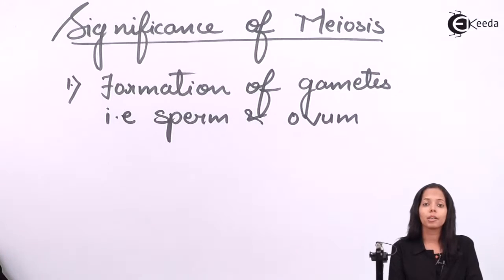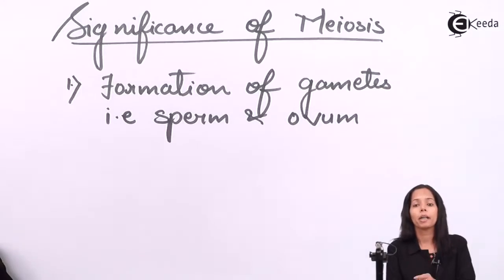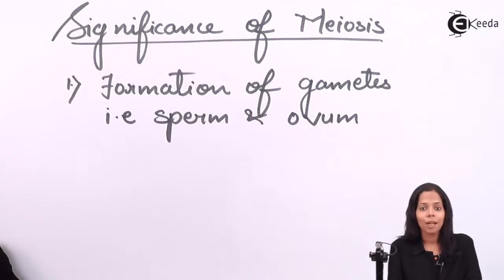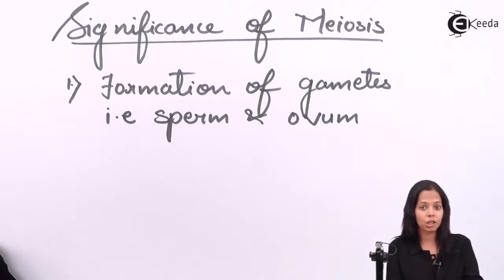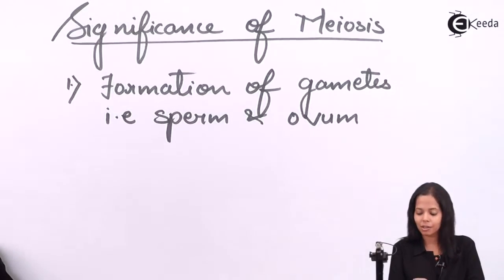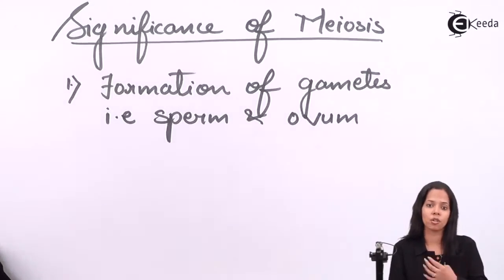Once they are fused, that is fertilization when it takes place, it forms the first cell of our life, that is zygote. This zygote contains 46 chromosomes. That is why in the process of reproduction, the next generation looks the same as the previous generation. This is the reason because of meiosis. So meiosis helps to retain the number of chromosomes in next generation.